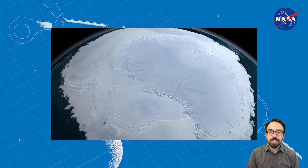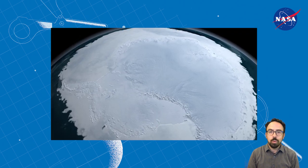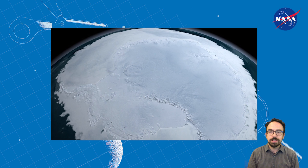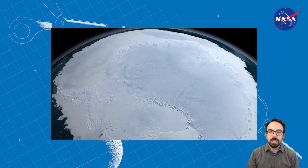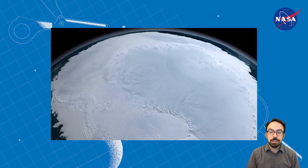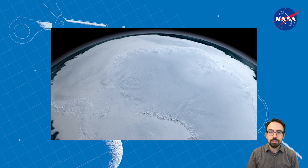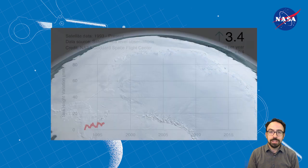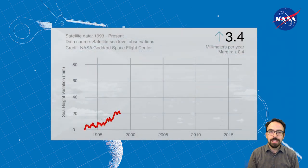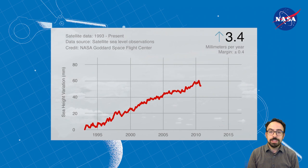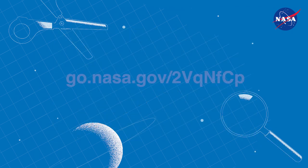Now that you've collected your data, think about what your observations mean for melting ice around the planet. In which container did water rise more? Why do you think that occurred? How does that compare to your prediction? Based on what you observed, does the melting of Earth's glaciers on land contribute to sea level rise?